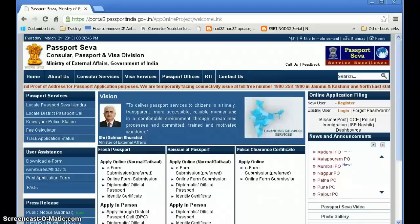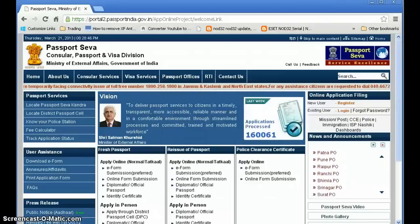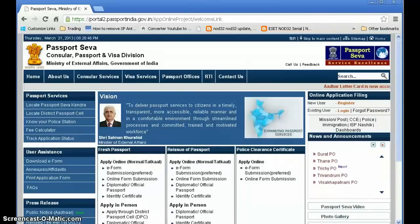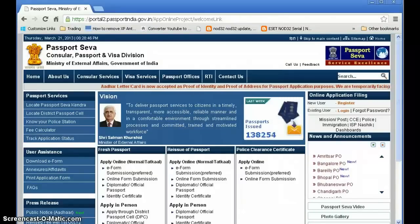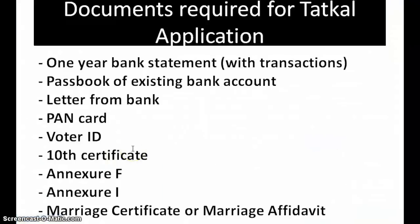Before visiting the Passport Seva Kendra, make sure you have all original documents and at least two sets of photocopies. Let's recap: one year bank statement (more than one year preferred) with bank seal and all transactions to date, passbook of existing bank account (original plus two photocopies), letter from the bank on the bank's letterhead with stamp and signature, PAN card, voter ID, 10th certificate, Annexure F, and Annexure I.